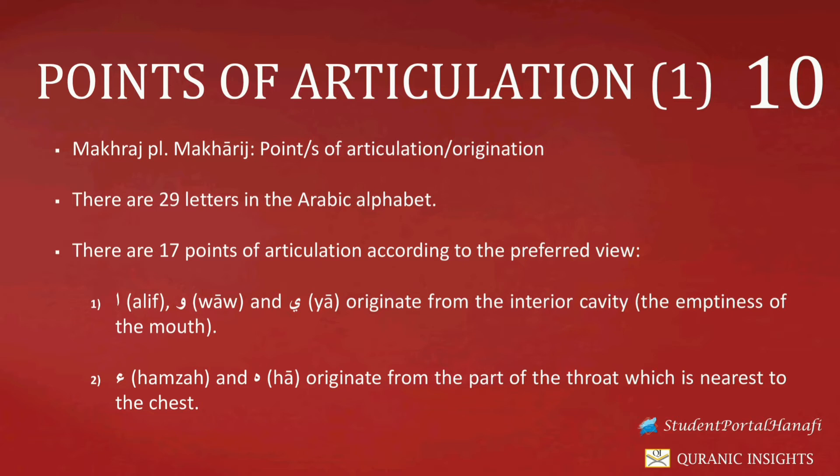So when we say Alif, it refers to the first letter without a harakah or without a sukoon. For example, in the beginning of Surah Al-Baqarah we have the word Abasarihim. Between the Saad and the Ra, we have the Alif. It doesn't have a sukoon above it, nor does it have a harakah above or beneath it. For this reason, this will be termed as an Alif. So the first letter we are dealing with is Alif, and it originates from a specific point of articulation.